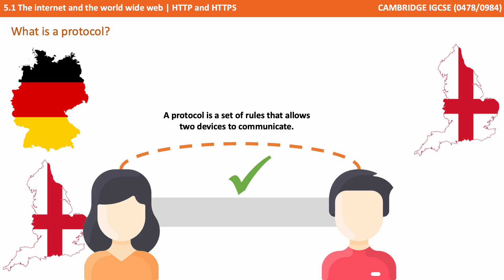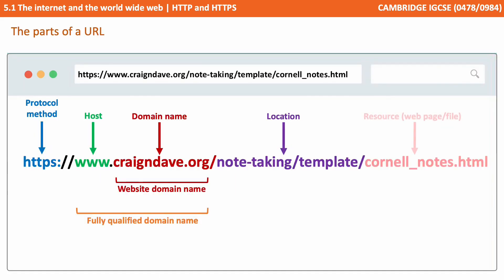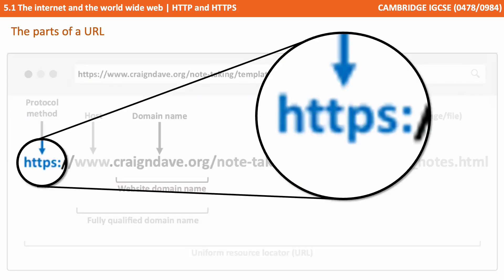A protocol is therefore a set of rules that allows two devices to communicate. We looked in the previous video at the Uniform Resource Locator, or URL, and we mentioned that the very first part of the URL specifies the protocol. So here we can see that this web address is using the HTTPS protocol.